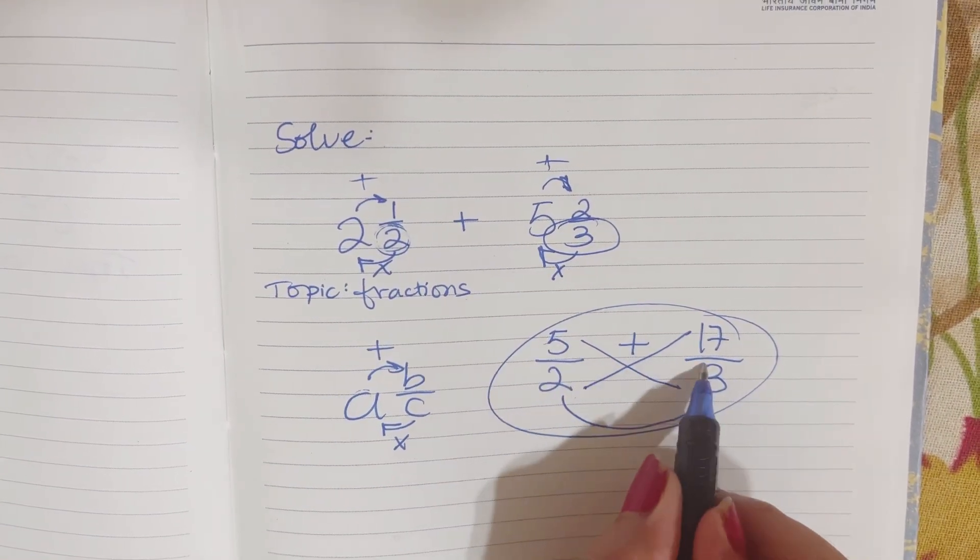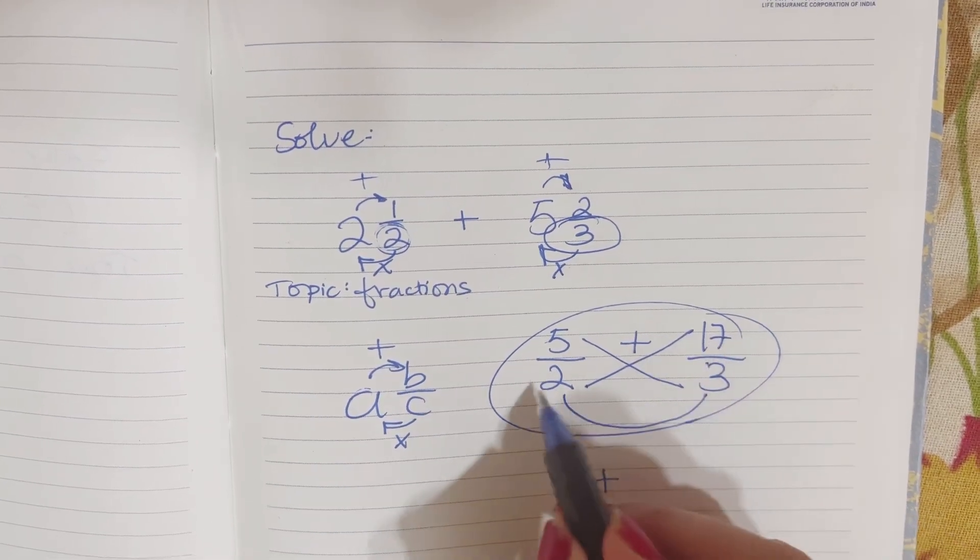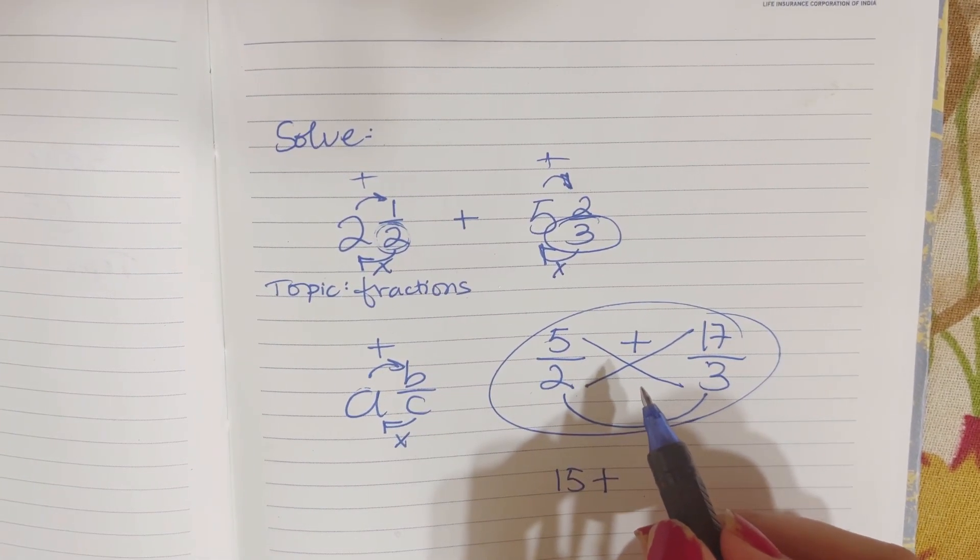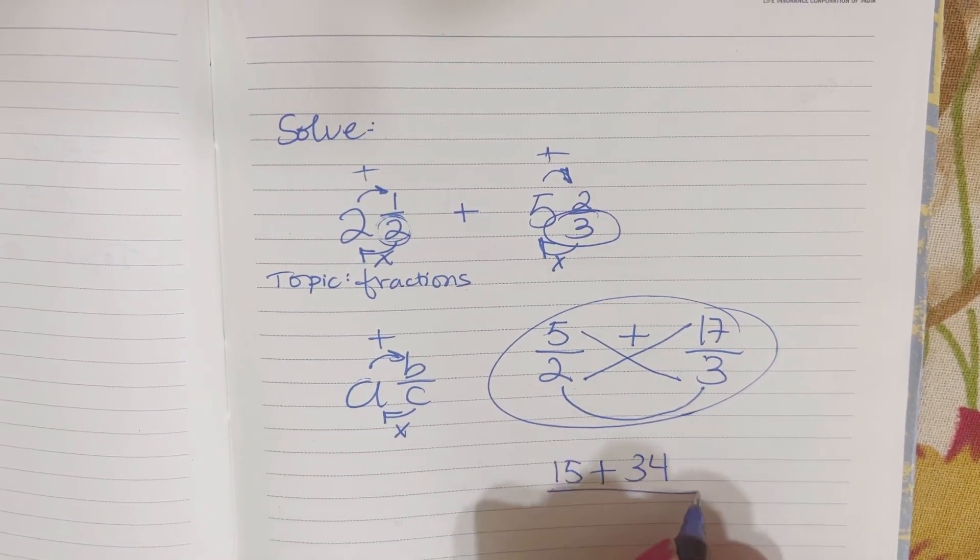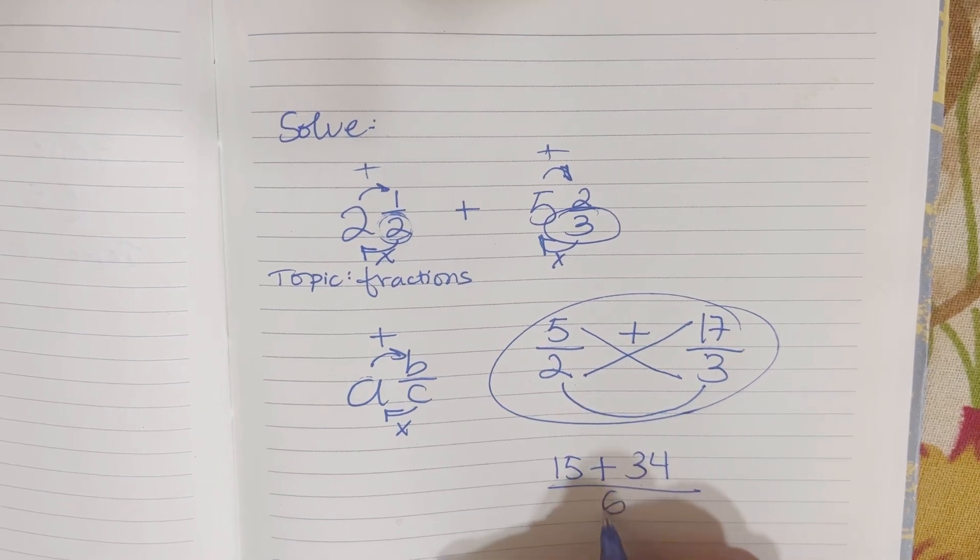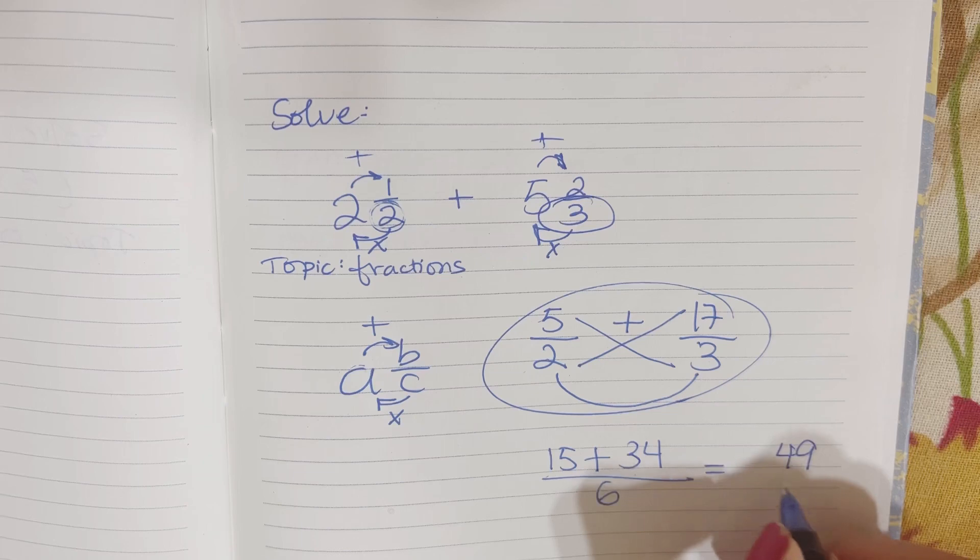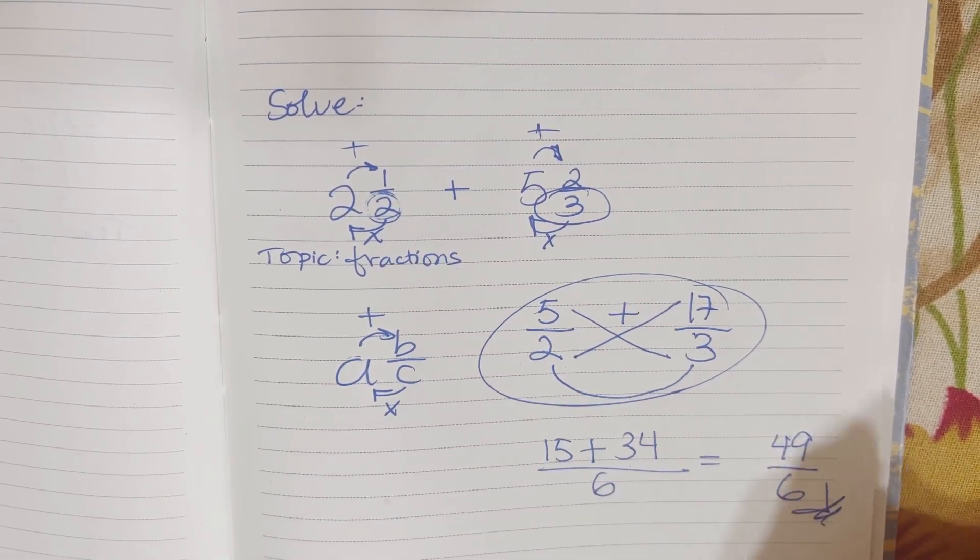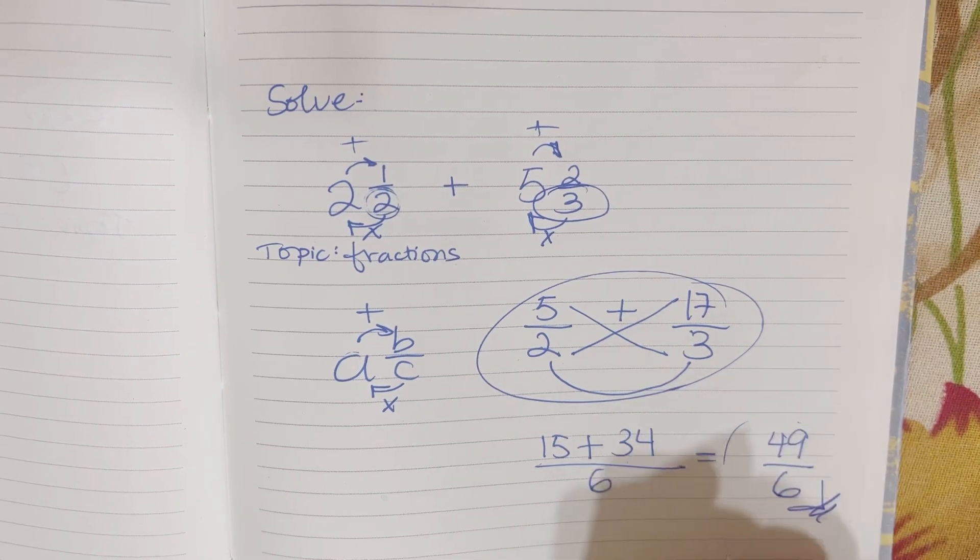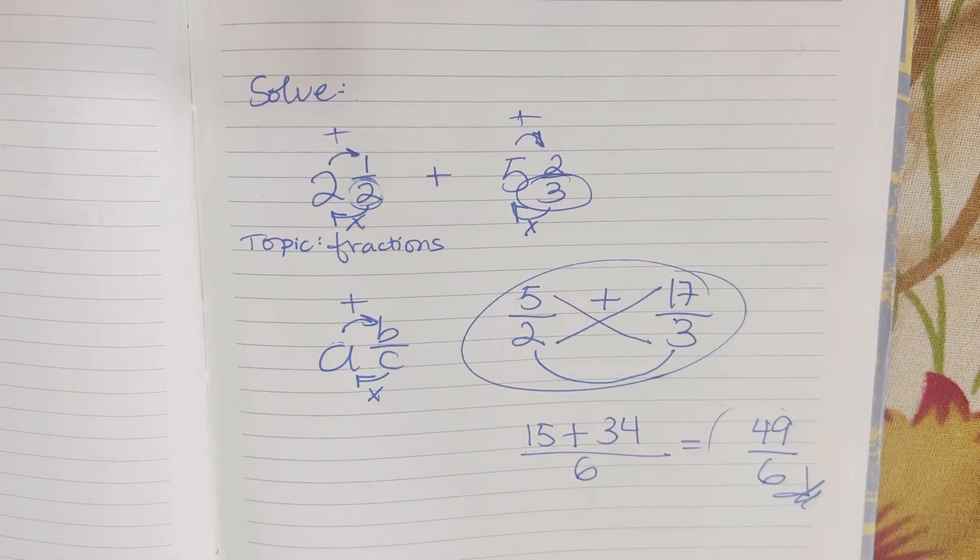So 5 multiplied by 3 is 15, plus 17 multiplied by 2 is 34. 2 multiplied by 3 is 6. Now you add this, which will be 49 divided by 6. If you want it in decimals, just put this in the calculator, but we're going to leave it as a fraction since it's a fraction problem.